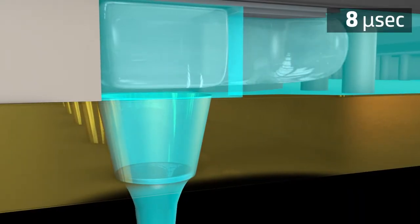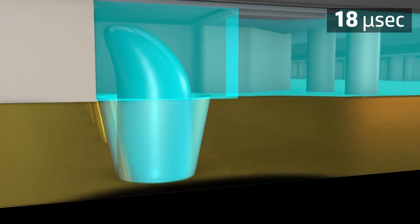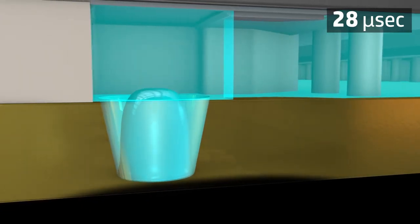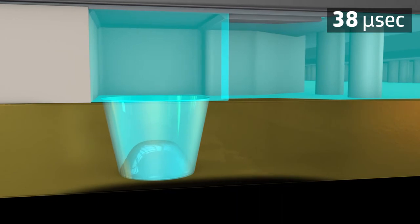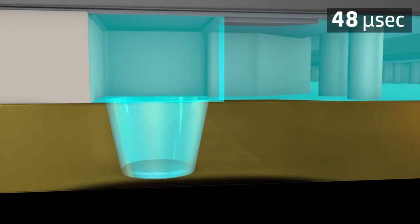The bubble collapses at 20 microseconds, and the meniscus settles at about 50 microseconds. The chamber and nozzle are designed for specific drop weight and ink properties.